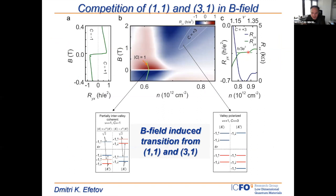Going back to our phase diagram: at zero field we get these low Chern number states — Chern number one — given by a partially intervalley coherent state. If we increase the magnetic field, this couples strongest to the higher Chern numbers and we obtain a valley-polarized state where one valley is polarized with respect to the other, giving a strong contribution of orbital paramagnetism.